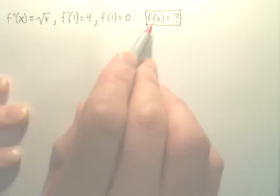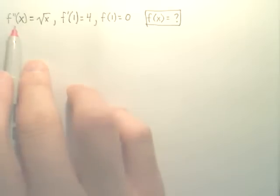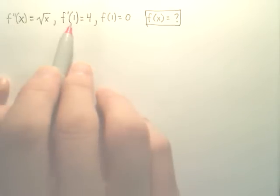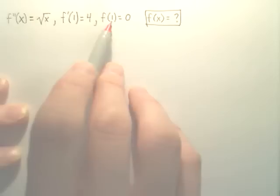Okay, we want to find f of x. We start with the second derivative, we start with a coordinate of the first derivative, and we start with the coordinate of the original function.